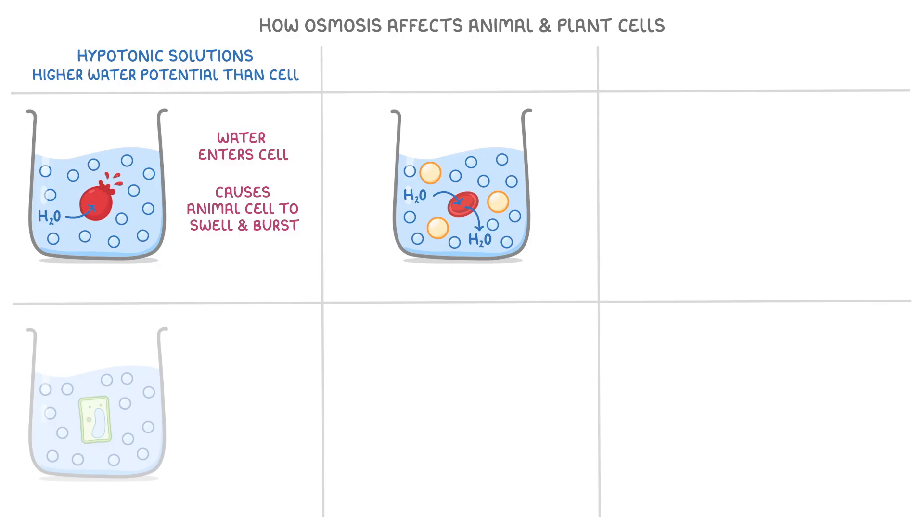If we did the same thing with this plant cell, however, because the plant cell has a sturdy cell wall, which the animal cell didn't have, this prevents the cell from bursting, and instead the water just depresses the cell membrane against the cell wall, and causes the cell to become turgid, which just means it's firm.